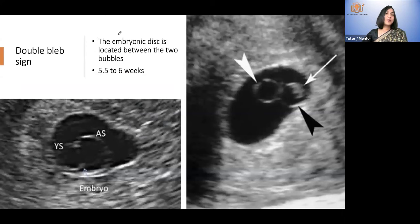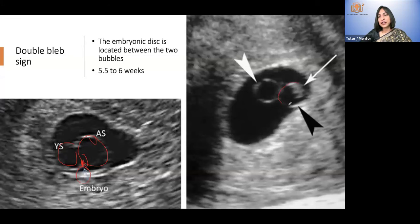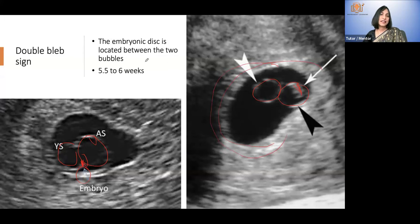What I want you to see is this double bleb sign. This is the yolk sac which appeared earlier and is still present, and there is an amniotic sac also. In this picture you see a small embryo — the embryo will not be present in the yolk sac; it has to be in the amniotic sac. In another clear picture: this is the amniotic sac, this is the yolk sac, and this is the embryo. That is the double bleb sign.